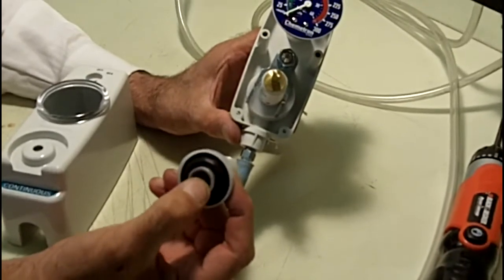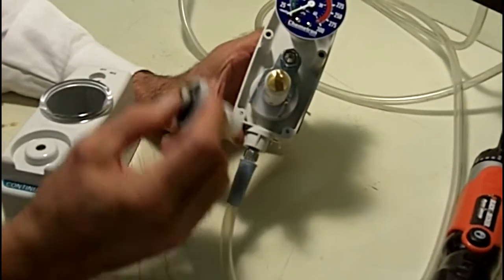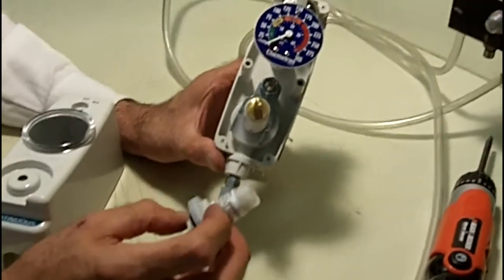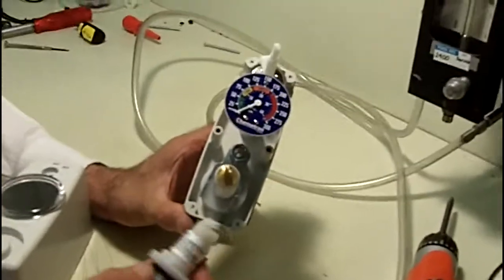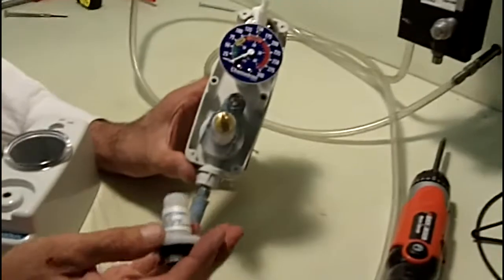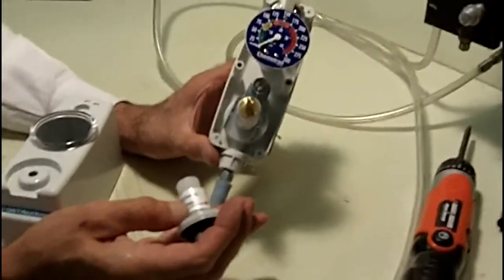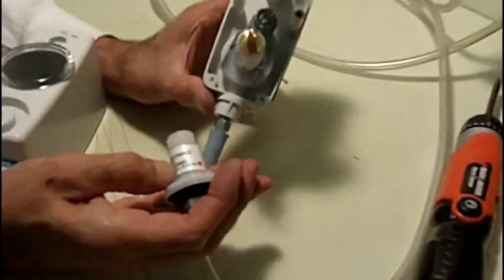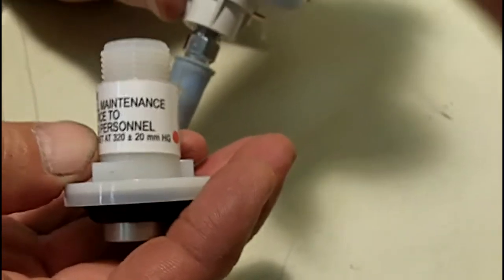We basically say at specified maximum, we should have 320 plus or minus 20 millimeters of mercury vacuum. That's what our settings are.